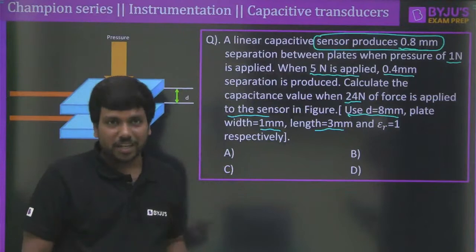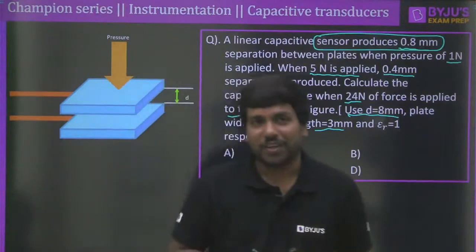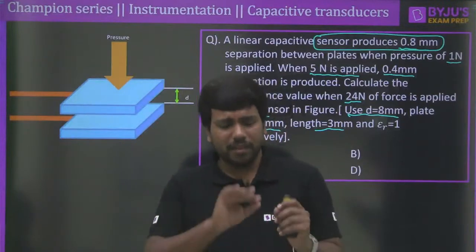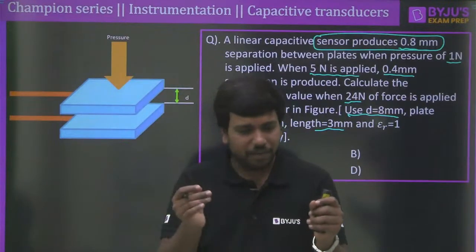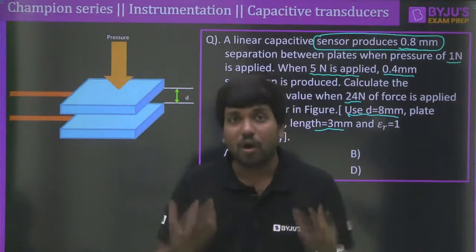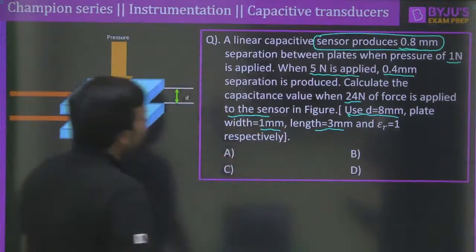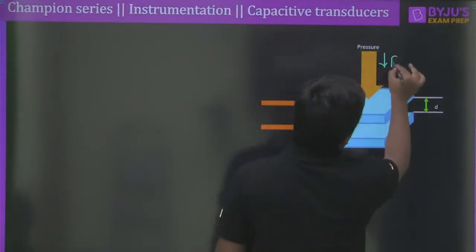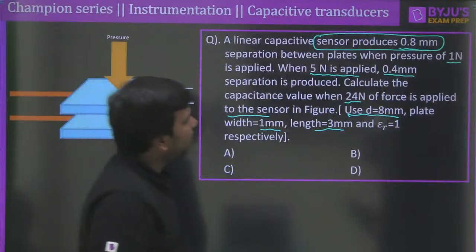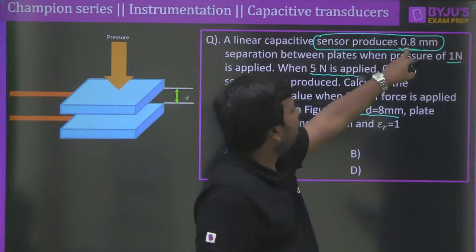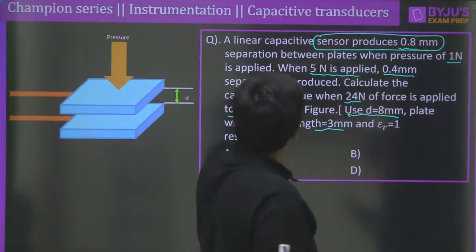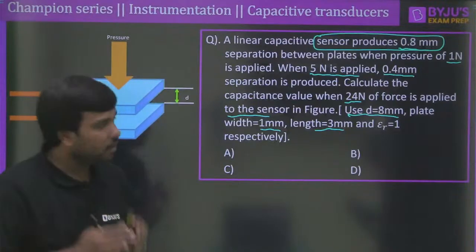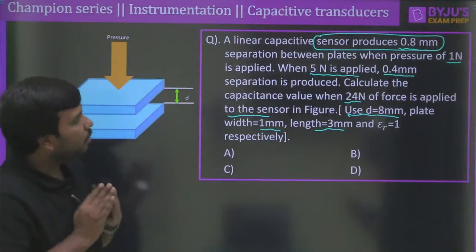The English statement of this question is not perfectly written, but you must use your common sense. The force-versus-displacement relationship may be non-linear, but given only two data points we will linearize it. When 1 N is applied the gap is 0.8 mm, and when 5 N is applied the gap is 0.4 mm — so increasing force reduces the gap between the plates.